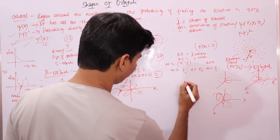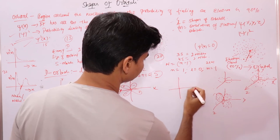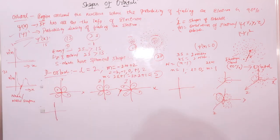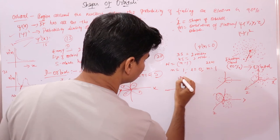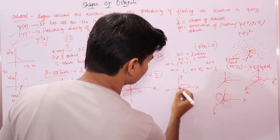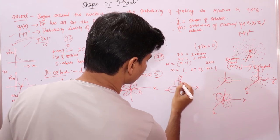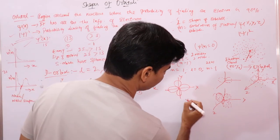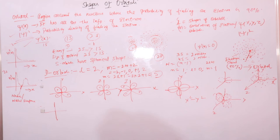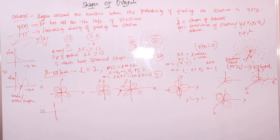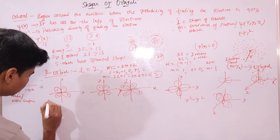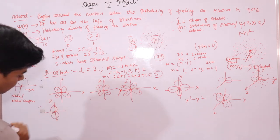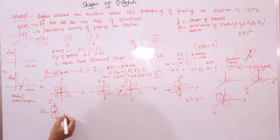One D orbital is along X and Y axis, given by x² – y². The fifth D orbital is directed towards the Z axis and is given by dz².